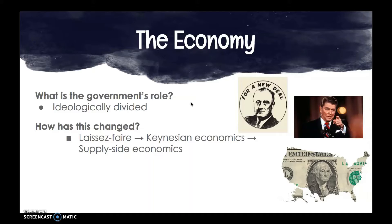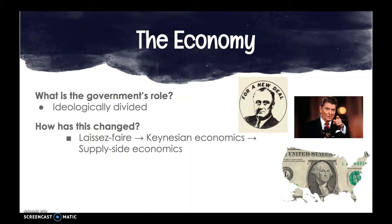Then we have an era of supply-side economics, also known as Reaganomics from the Reagan administration. The idea is that you want to stimulate the supply of goods, especially through cutting tax rates. By reducing government involvement and cutting taxes, this will trickle down and benefit all of society by promoting investment.